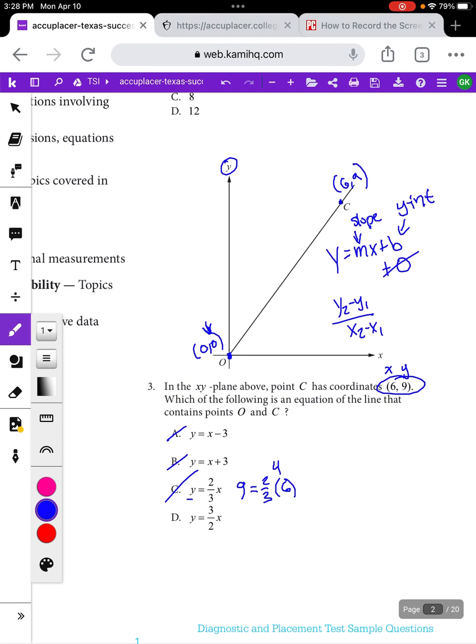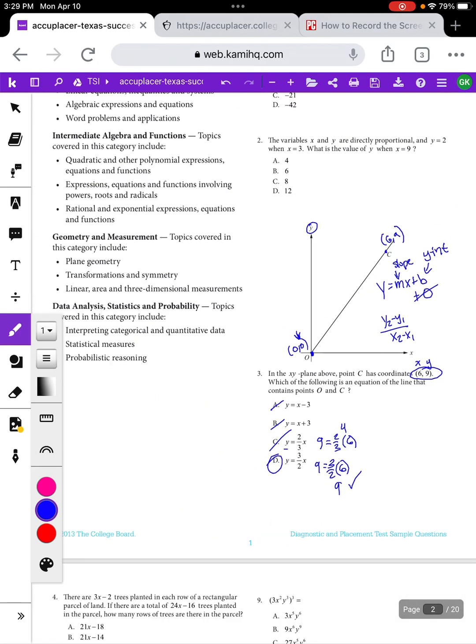The only thing we're left with is D, but it's always good to verify that your answer that you have left actually works. If I plug in 9 for y, I get 9 equals 3 over 2 times 6. 3 over 2 times 6 is in fact 9. So 9 equals 9 is a true statement. So we have our answer to that question.